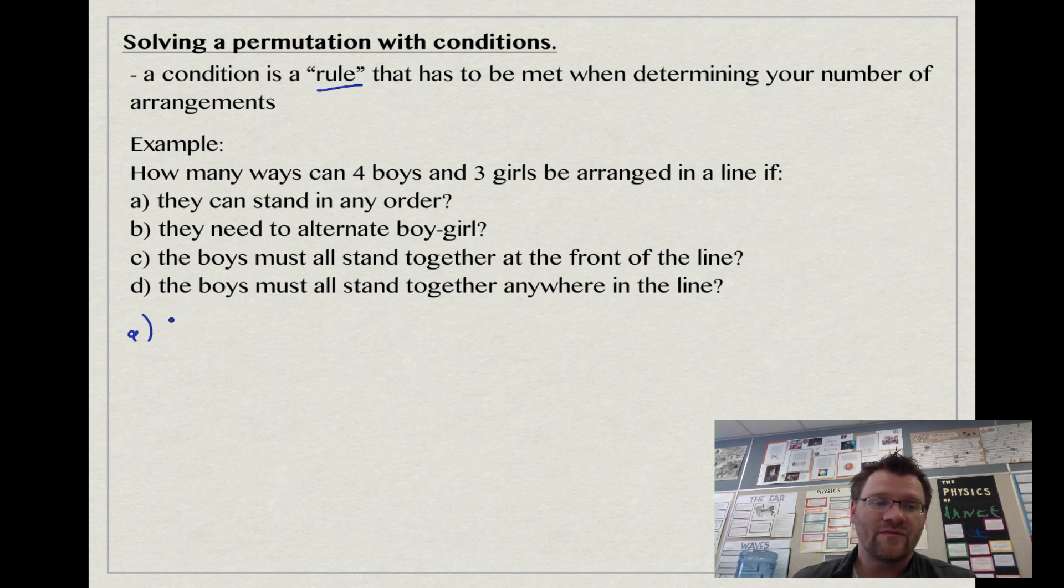The first one, part A, where all four boys and three girls can stand in any order. That just means there's seven of them. That'll be seven factorial, which equals 5,040.